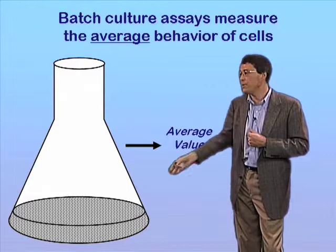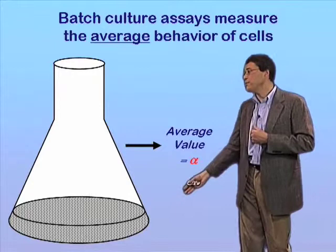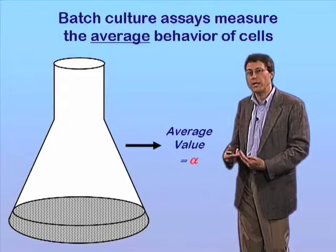That would typically be to take a population of cells growing in a shaker flask like this one, and then to pool the cells, to grind them up, to extract, say, an enzyme and measure enzyme activity, or the amount of DNA, or this sort of parameter.